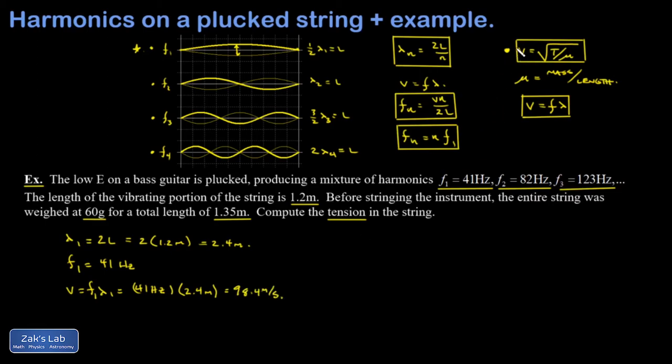All right. Then I go to my equation that relates the wave speed to the tension and the linear density. Well, it looks like I'm going to have to find that linear density. So the mass per unit length was 60 grams or 0.060 kilograms over a length of 1.35 meters. And that gives me 0.0444 kilograms per meter.